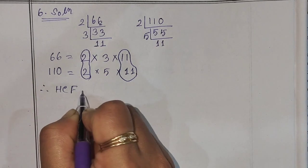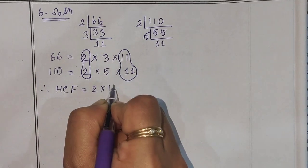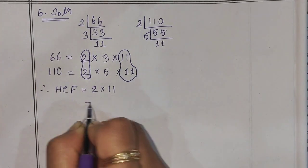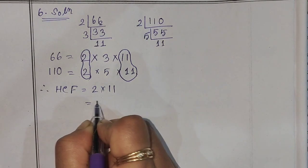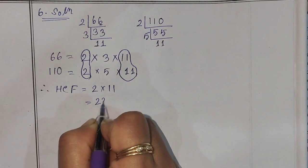HCF is equal to 2 into 11. That is 2 into 11 equals 22.